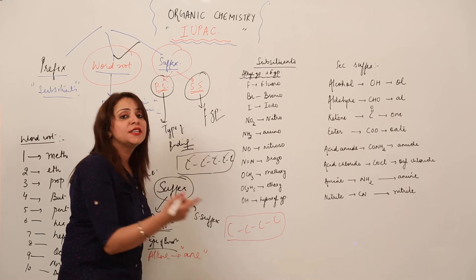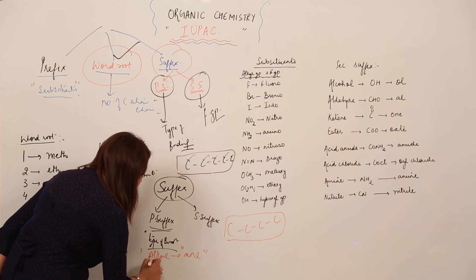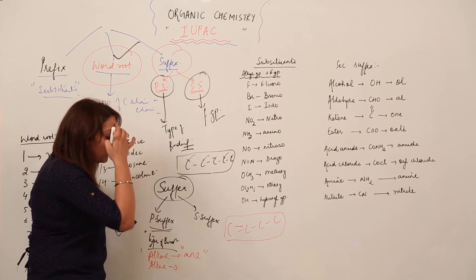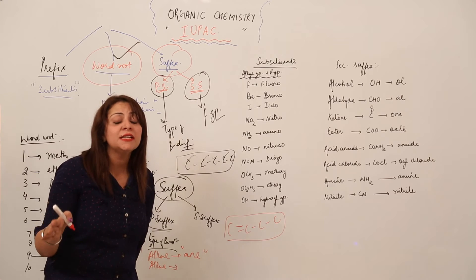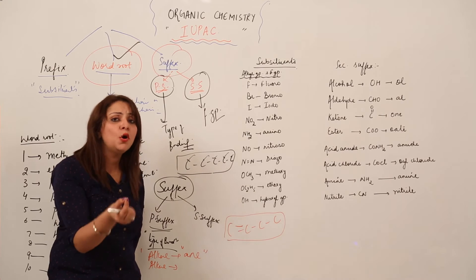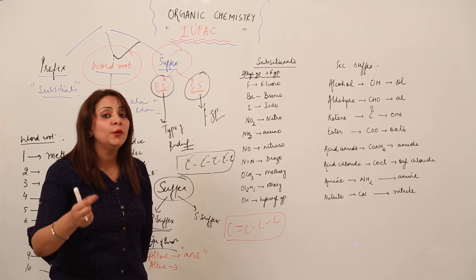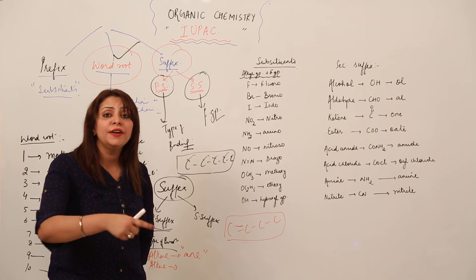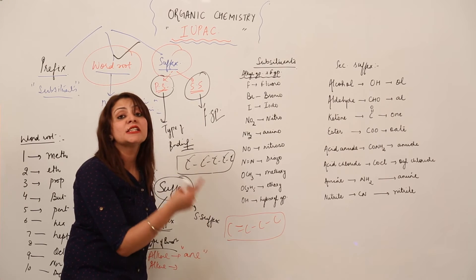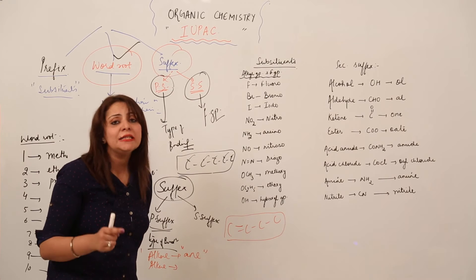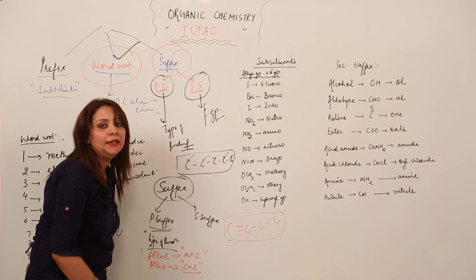If I give you a compound and ask for the primary suffix, you just look at the bonds. If you see only single bonds, the answer is 'an.' If there is at least one double bond present in the chain, the compound belongs to the unsaturated category — specifically alkene — and the suffix used is 'en.' If there is a triple bond, it belongs to alkyne. Single bond = 'an,' double bond = 'en,' triple bond = 'yne.'